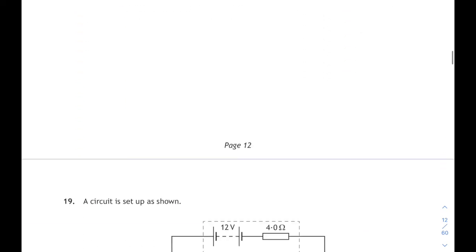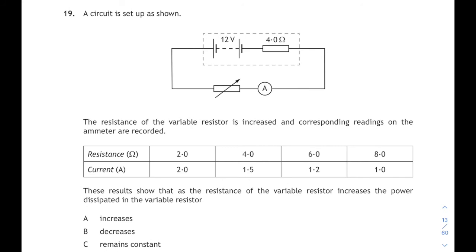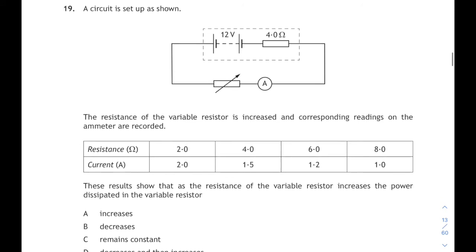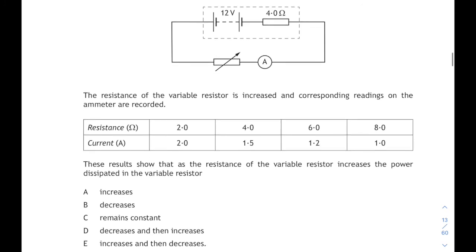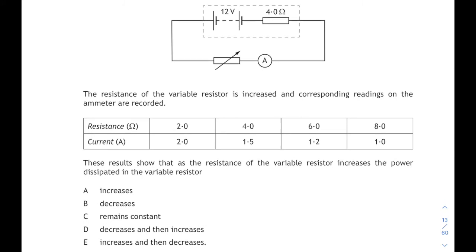On we go. Question 19, this looks like internal resistance here. The resistance of a variable resistor is increased and corresponding readings on an ammeter are recorded. These results show that as the resistance increases, the power dissipated in the variable resistor. This looks like we're going to have to work out power for each of these sets of readings. Again, we're going to need our relationship that we met in national 5 that relates power with current and resistance. That relationship is P equals I squared R. For each of these columns of values, we're going to work out P equals I squared R.